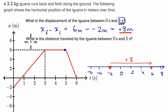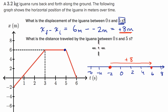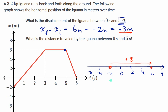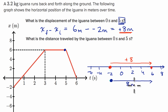Now what about the distance traveled by the iguana over that same time period? Distance is the total length traveled, the total path length. It went from negative two all the way to positive six over the first three seconds, and then it just stays there. So even though we don't care about direction — just the magnitude — we still get the same result: it traveled eight meters.